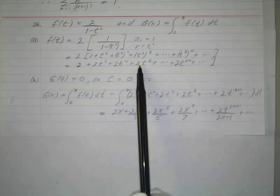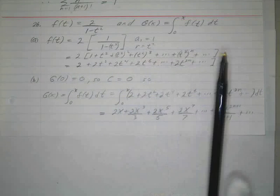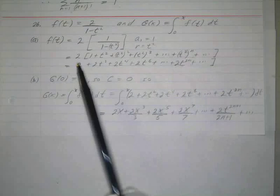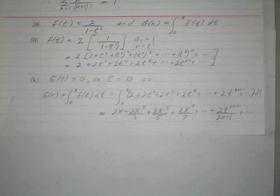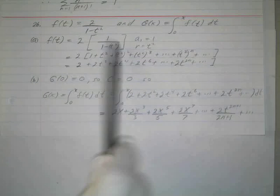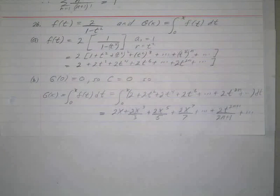2, 2t squared, 2t fourth, 2t sixth, and the same over here, 2 times this, 2 times t to the 2m. Okay, so that's the general term, so that's not too bad. Again, those geometric series really make life easy. You can happen to stumble upon one.